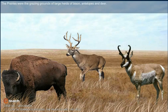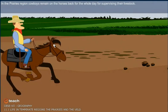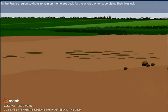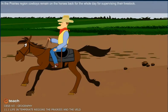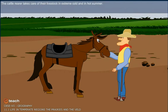The major occupation of this region is cattle rearing and farming. The prairies were the grazing grounds of large herds of bison, antelopes, and deer. In the prairies region, cowboys remain on horseback for the whole day supervising their livestock, taking care of them in extreme cold and hot summer.